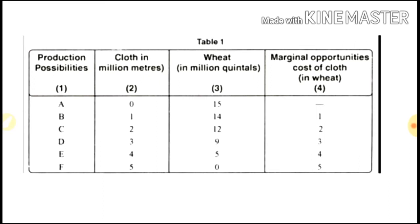So, what is the Marginal Opportunity Cost? What is the cost related to the production possibility? The Marginal Opportunity Cost is the cost we incur when we shift resources from one good to another.